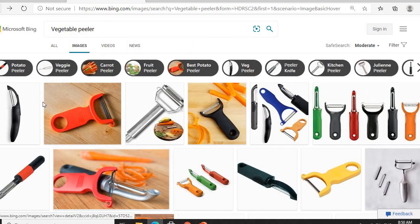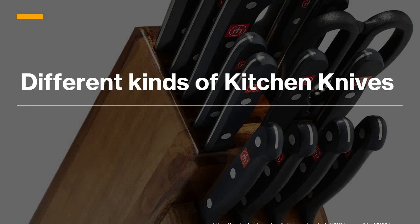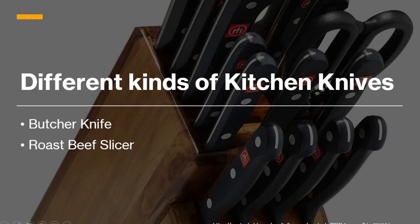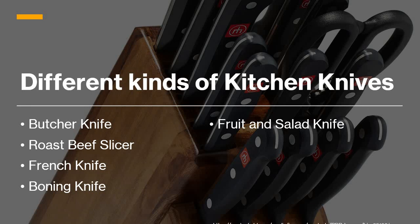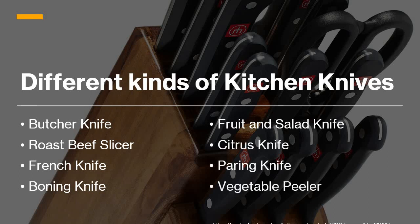That's it for the different kinds of knives. Let's review our lesson for today — the different kinds of kitchen knives found in our kitchen: butcher knife, roast beef slicer, French knife, boning knife, fruit and salad knife, citrus knife, paring knife, and vegetable peeler.